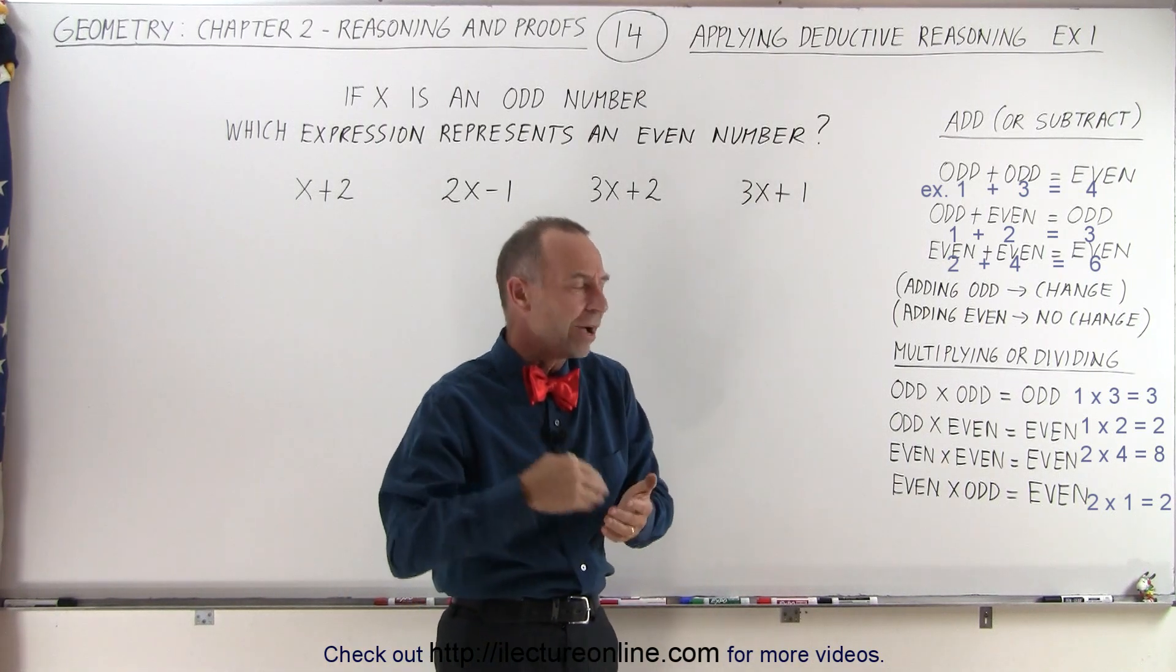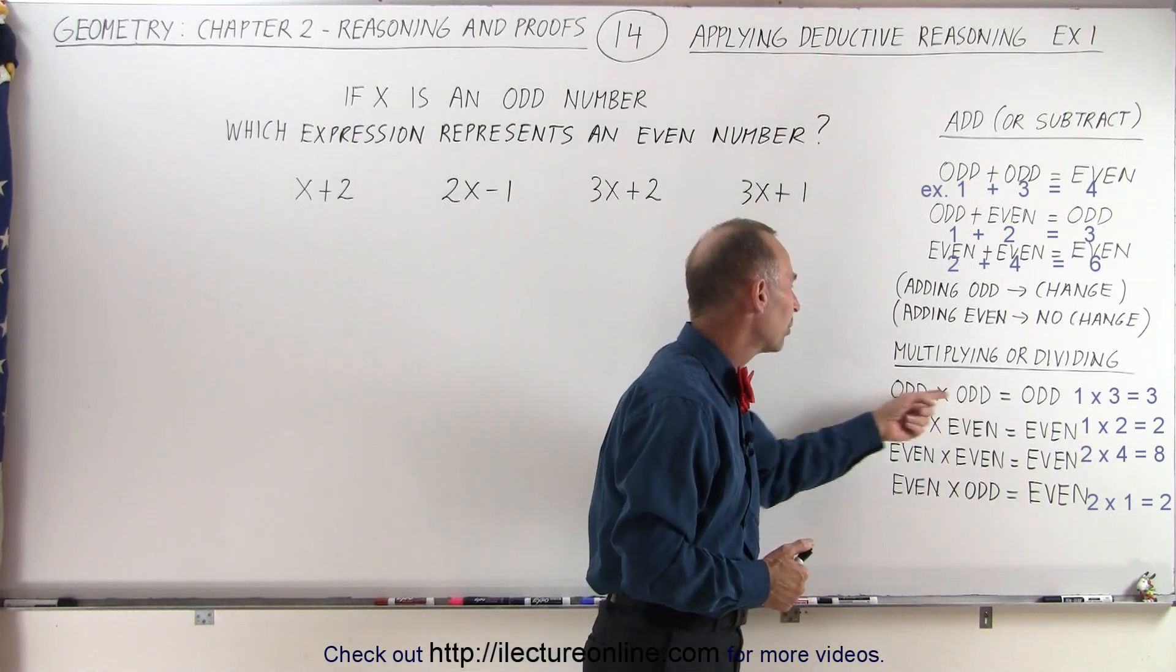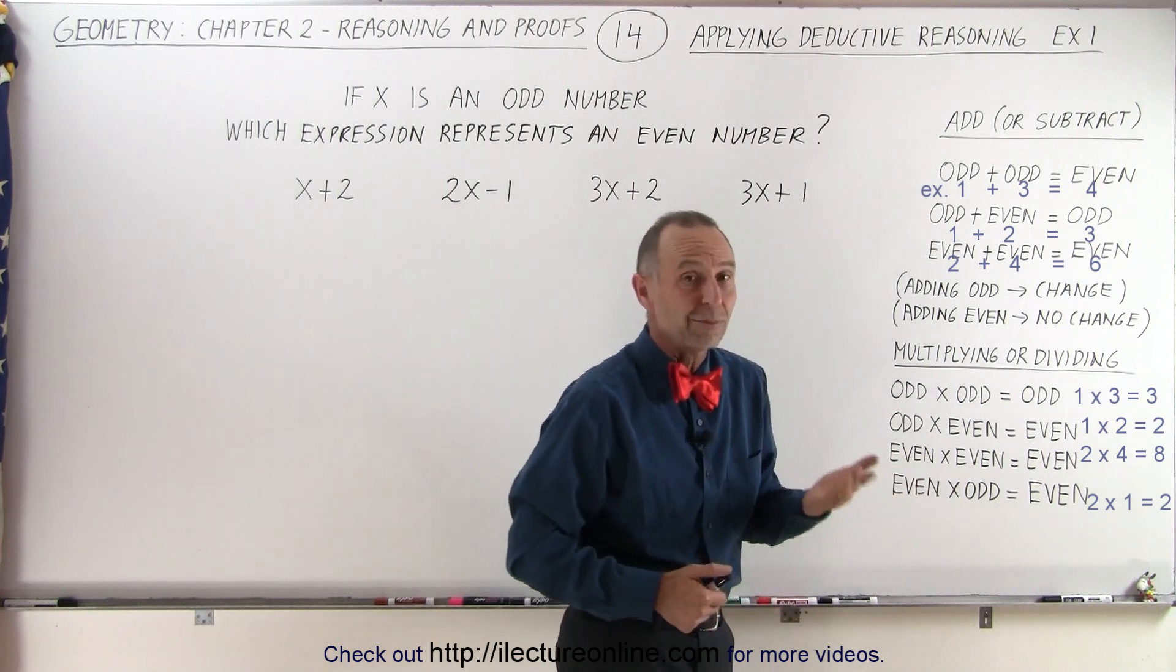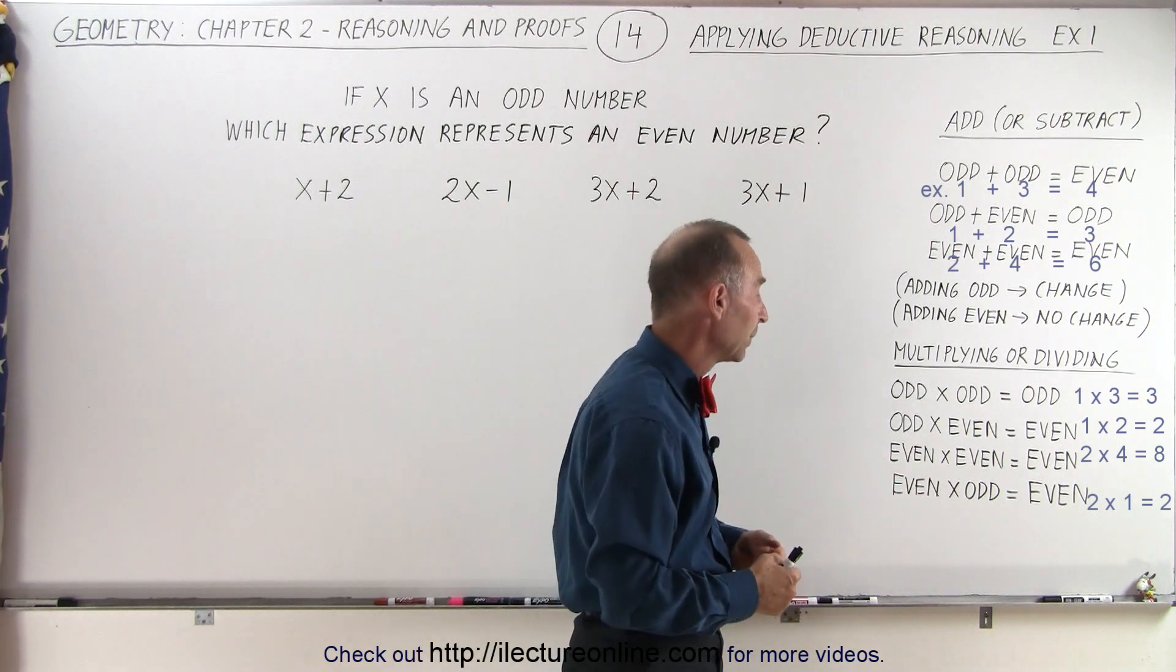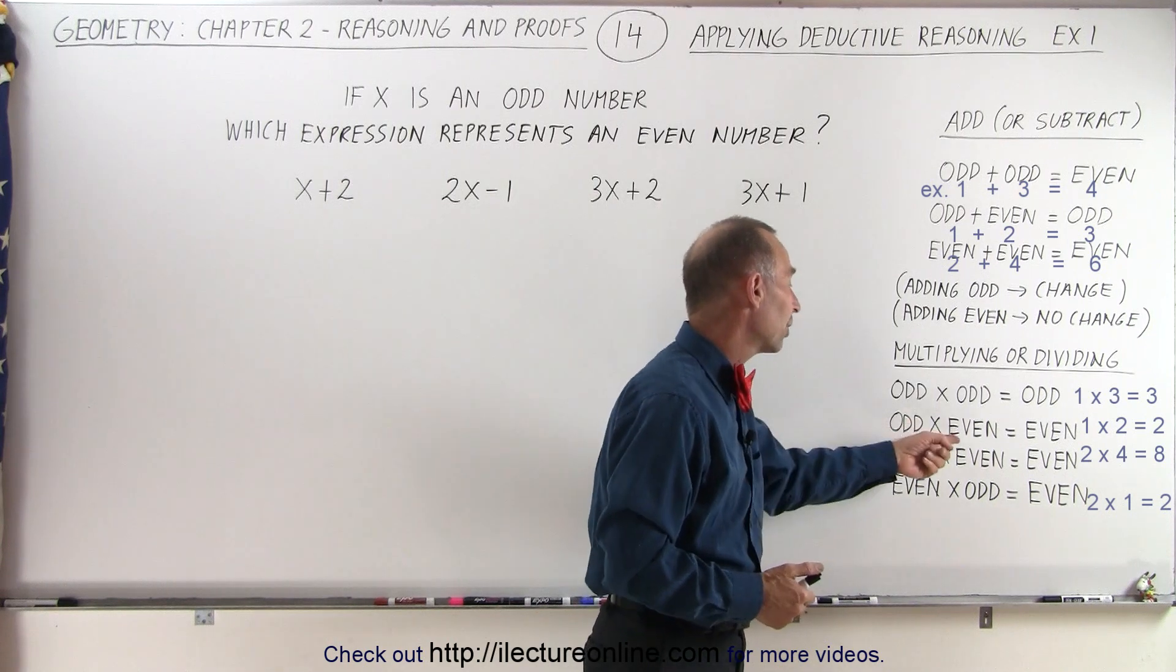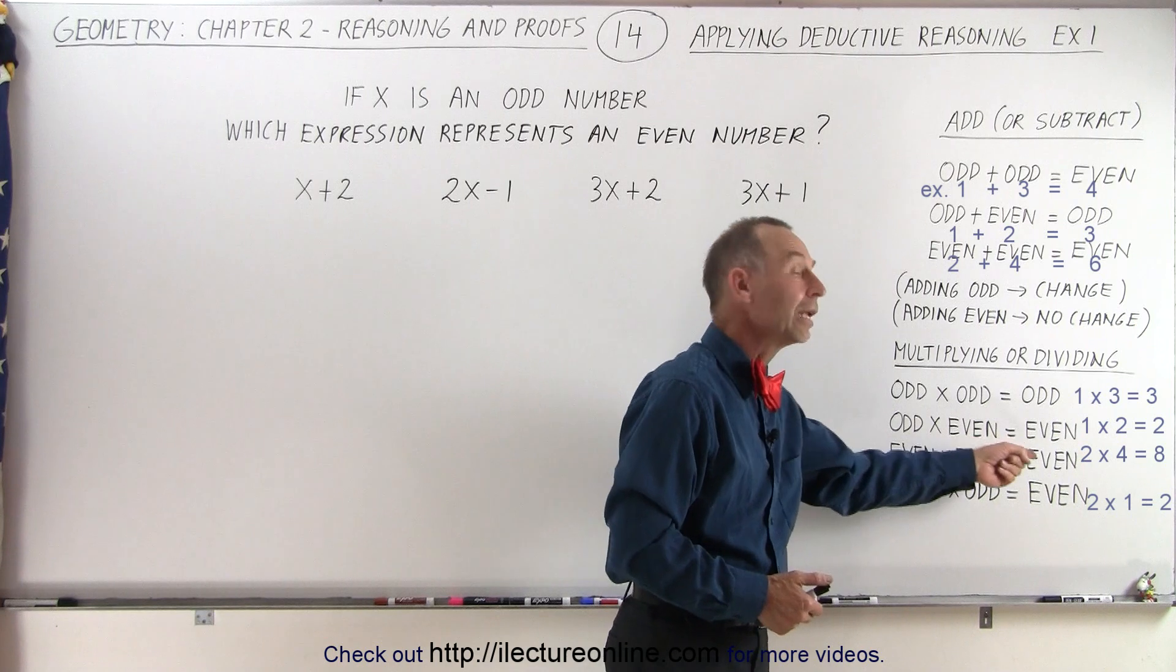When we multiply or divide, notice what happens now. We multiply two odd numbers together, we get an odd again. Like 3 times 5, they're both odd numbers, we get 15, that's still an odd number. If one is odd but the other one is even, we get an even number. Or when they're both even, we get an even number.